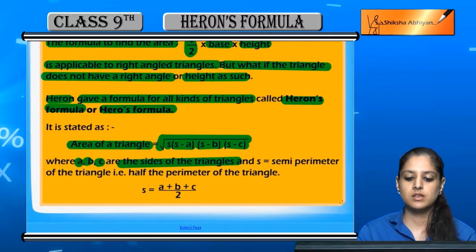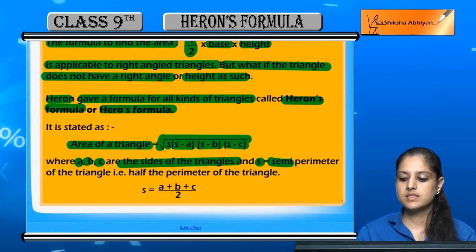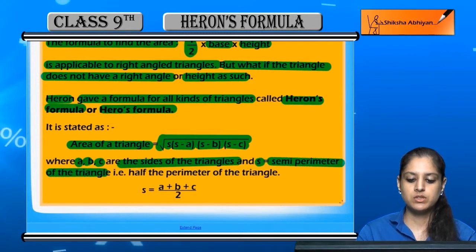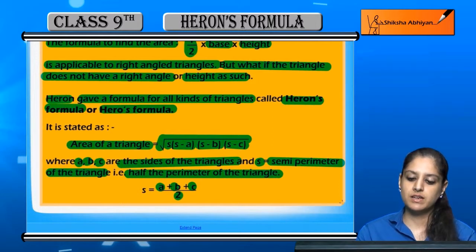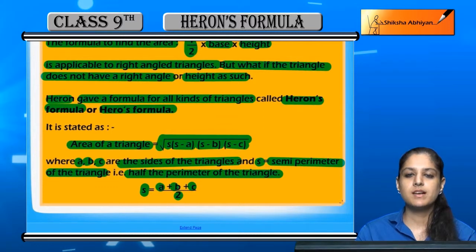And s is semi perimeter of the triangle, meaning half perimeter. What is perimeter? a plus b plus c. If we divide it by two, then we have s which is semi perimeter of triangle.